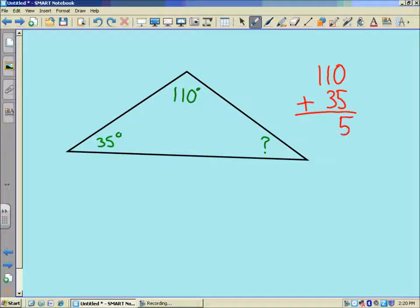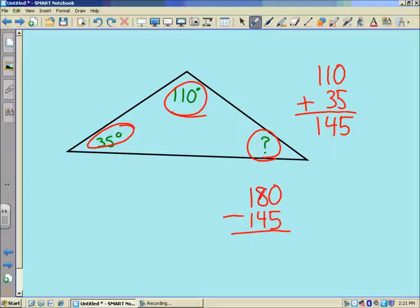0 plus 5 is 5. 1 plus 3 is 4. And we're left with, now we have 145 degrees in total for these two angles. We want to find the third. So knowing that there are 180 degrees in each triangle, I'm going to subtract 145 from 180. And then we'll get 10 minus 5 is 5. 7 minus 4 is 3. And then we're left with 35 degrees.